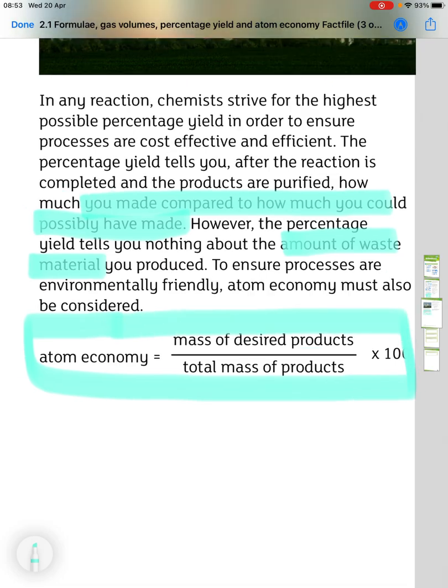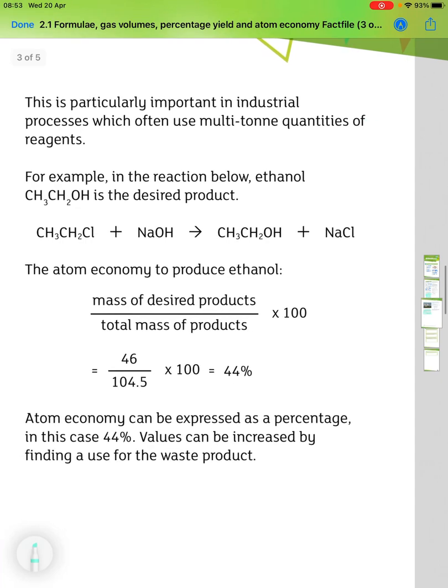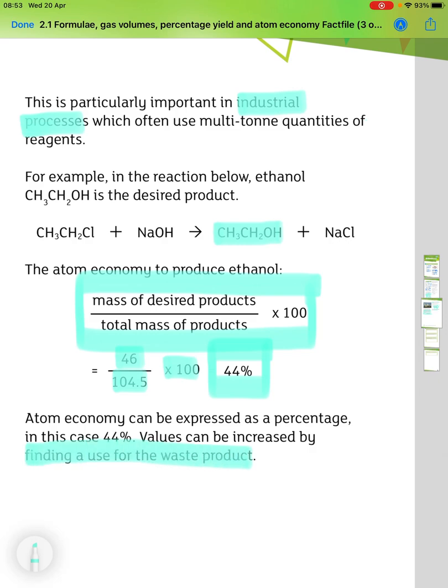To calculate atom economy, it's the mass of desired products divided by the total mass of the products times 100. It's particularly important in industrial processes, which often use multi-tonne quantities of reagents. For example, in the reaction below, ethanol is the desired product. The atom economy to produce ethanol is the mass of the desired products, divided by the total mass of the products times 100. So the mass of ethanol is 45, the total mass of the products is 104.5, multiply that by 100 gives us 44%. Atom economy can be expressed as a percentage, in this case 44%. Values can be increased by finding a use for...